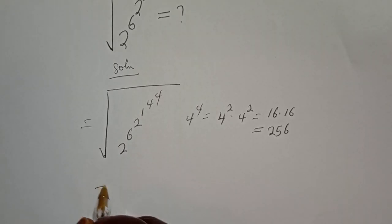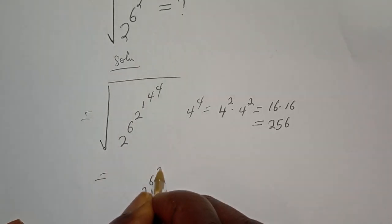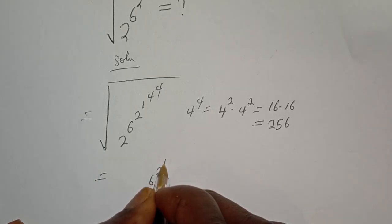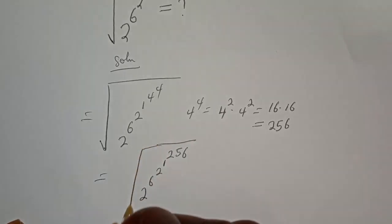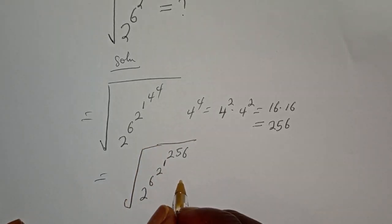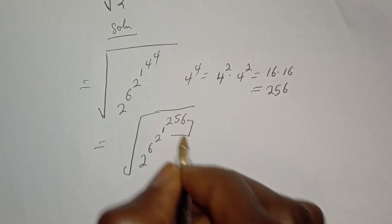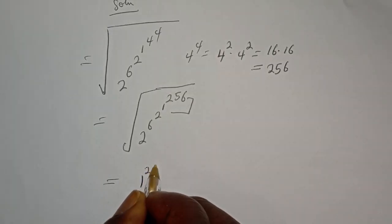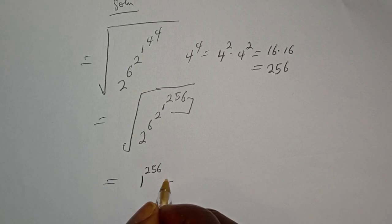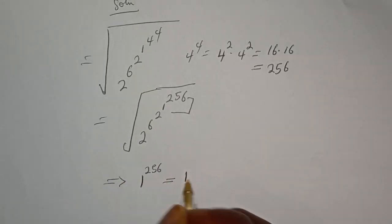Now this is equal to the square root of 2 raised to power 6, times 2 raised to power 1, to the power of 256. Let's work with the next step: 1 raised to power 256 is equal to 1.